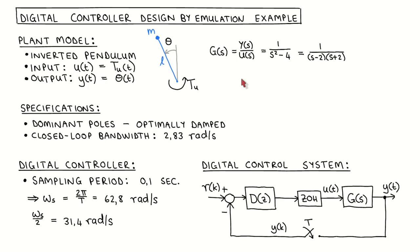The specifications for the control system are that the dominant poles should be optimally damped and the closed loop bandwidth should be 2.83 radians per second, which is determined by the natural frequency of the dominant closed loop poles. The plant should be controlled by a digital controller.